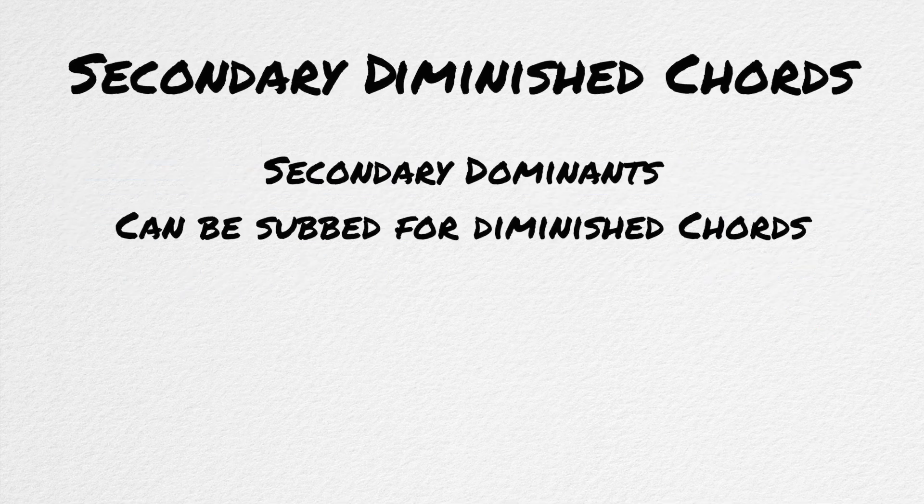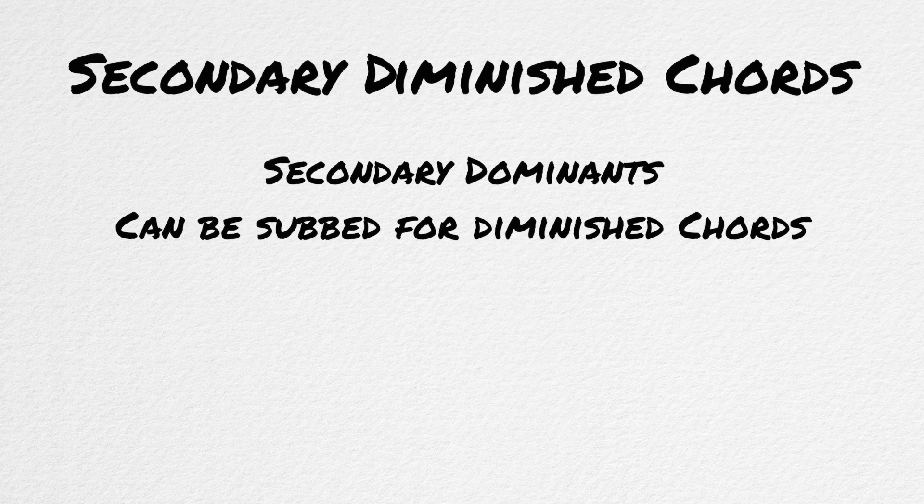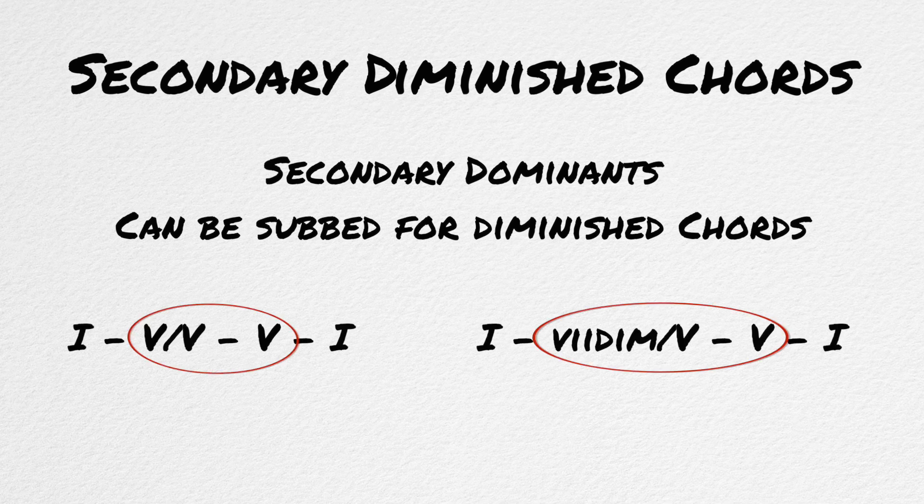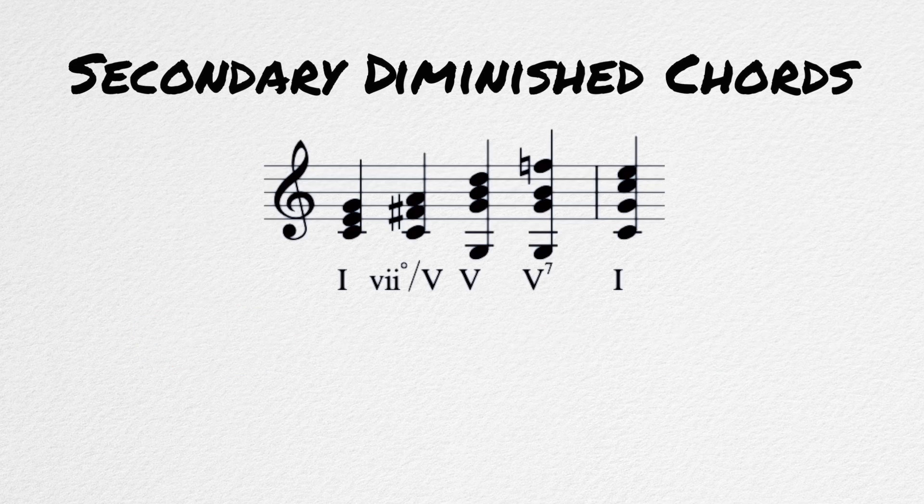Secondary diminished chords. Because diminished chords have dominant function as well, they can also be used as secondary dominant chords. Instead of setting up a V of something, we can set up a VII diminished of something.